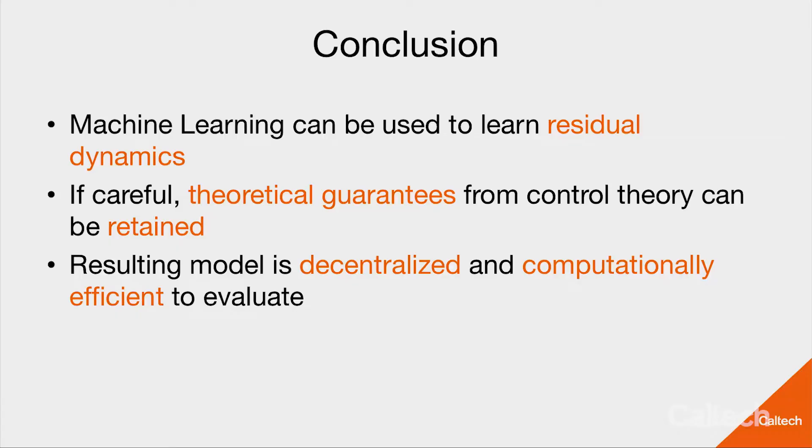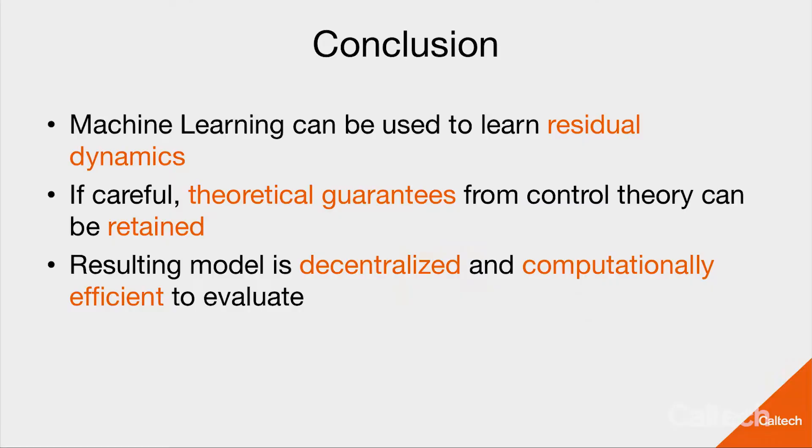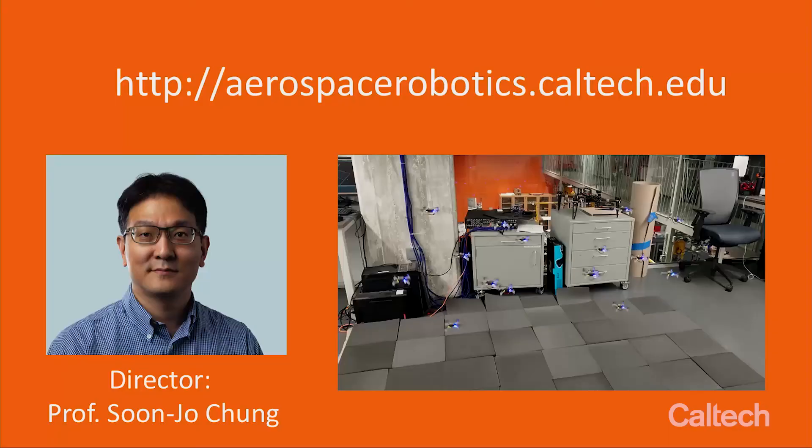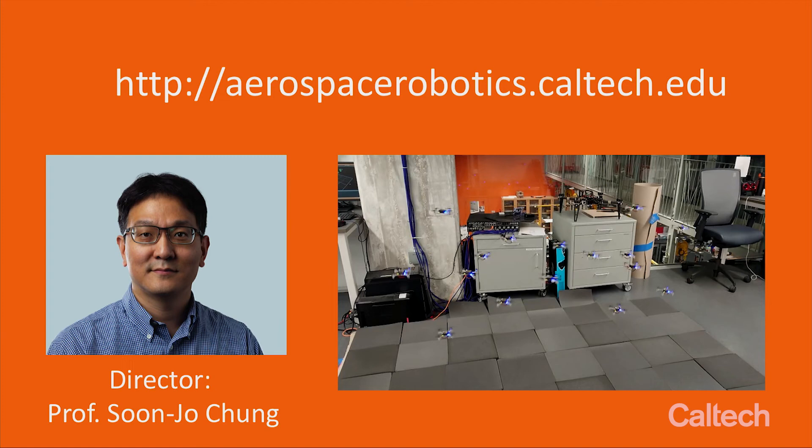All right. So in conclusion, for this talk, we used machine learning to basically learn the residual dynamics and applied it to a nonlinear controller. With some careful tricks or techniques, we managed to actually retain the theoretical guarantees that we had before from control theory. And another side effect for this particular one is that because we use this deep set architecture, our model is actually decentralized, and we have shown that it's computationally efficient because we can run it on those very small microcontrollers. Now, I hope I excited you for the field of robotics, and if you're an undergrad and you're still looking for a place to be, our lab, this paper is at aerospacerobotics.caltech.edu, and the director of the lab is Professor Soon-Jo Chung. Thank you very much.